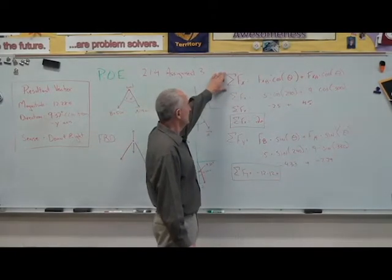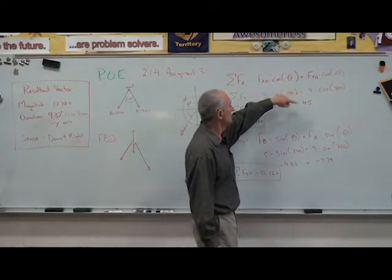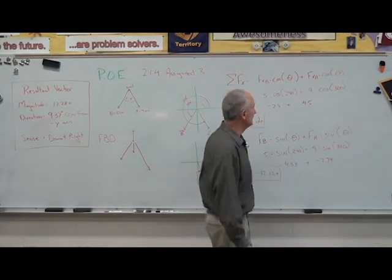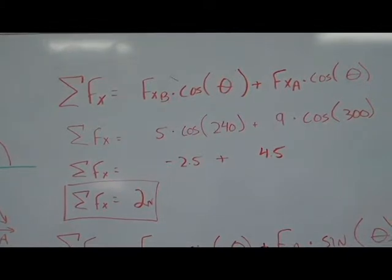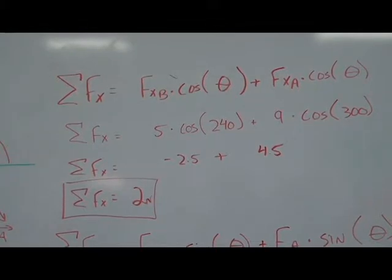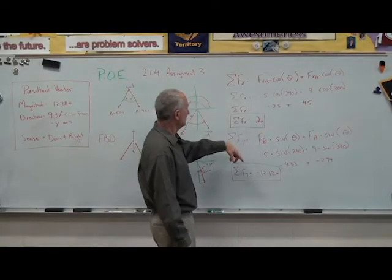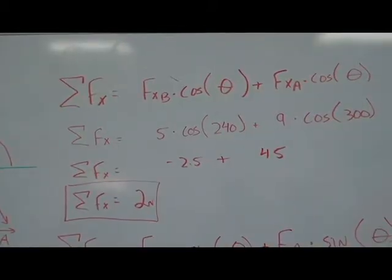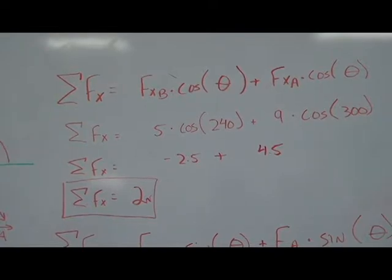To find the sum of the x, I use the force of the vector times the cosine of the angle for every vector. I have vector b, which is five newtons times the cosine of 240, plus the force of vector a, which is nine newtons times the cosine of 300. When I calculate that out, I get negative 2.5 for vector b and 4.5 for vector a. I sum those together; the forces in the x are equal to two newtons.